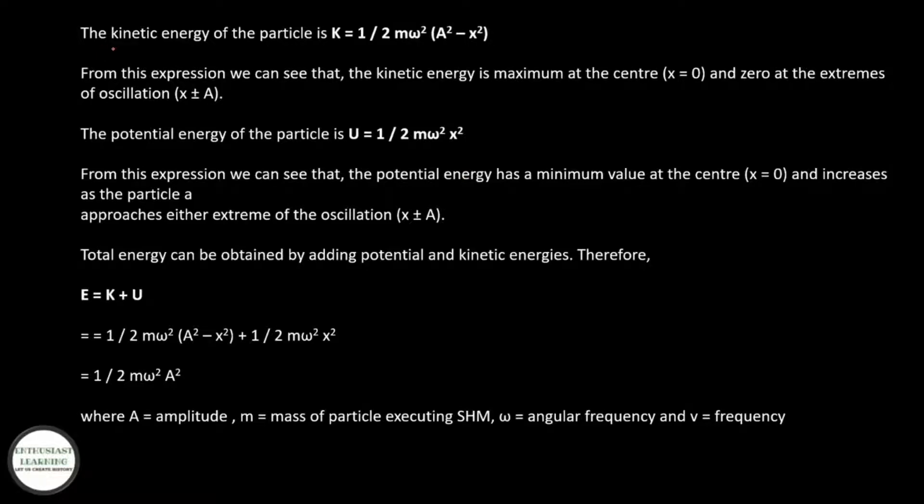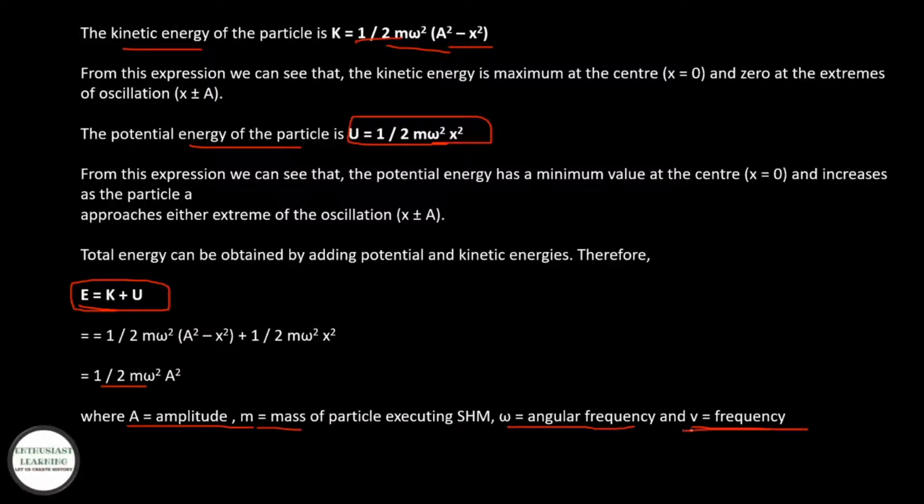Now energies in SHM. The kinetic energy is given by KE = (1/2)mω²(A² - x²). The potential energy is PE = (1/2)mω²x². Total energy is KE + PE = (1/2)mω²A², where A is the amplitude, m is the mass, ω is angular frequency, and f is the frequency.